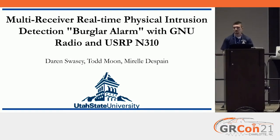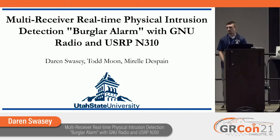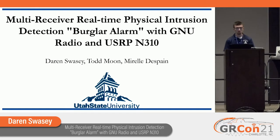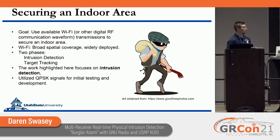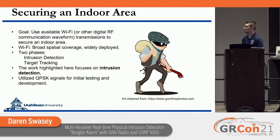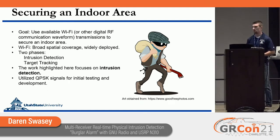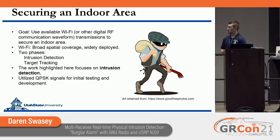My name is Darren Swayze. I'm an electrical and computer engineering student at Utah State University in my senior year. The project I've been working on over the summer is a burglar alarm using GNU Radio and the USRP N310. Our goal in the research is to secure an indoor area using RF signals. The main intent is to use Wi-Fi, but at the current stage of development we're using QPSK to prototype and develop the algorithms needed for that security.